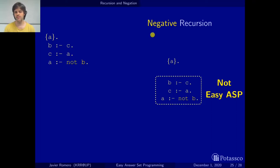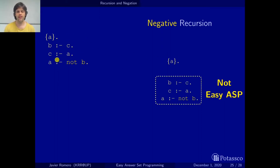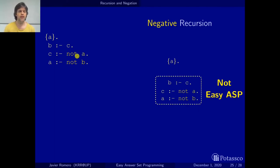And we will say that this is negative recursion and this will not be part of easy ASP. We will not write these rules with negative recursion in easy answer set programming. And of course, if we add more negations here in the body, still this is negative recursion and this is not easy ASP.